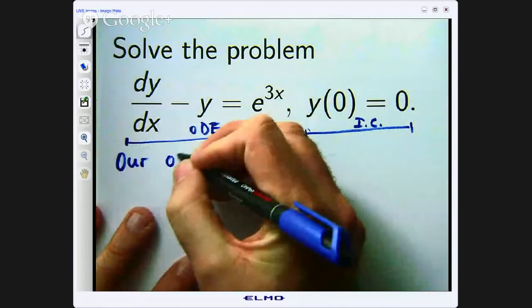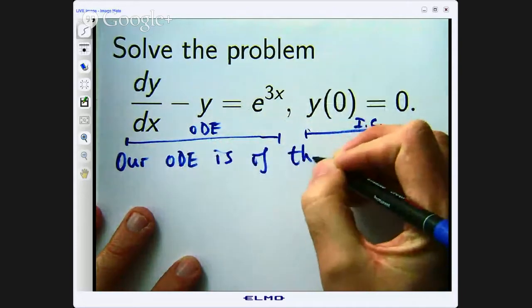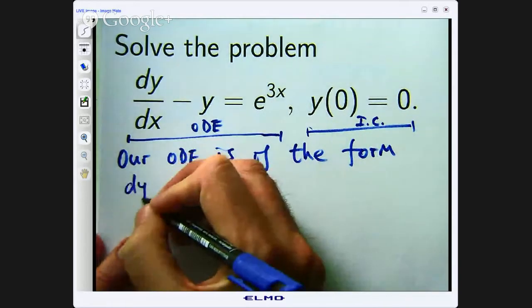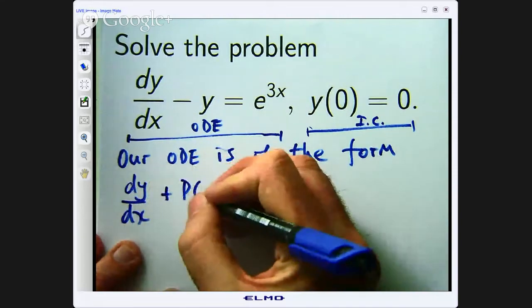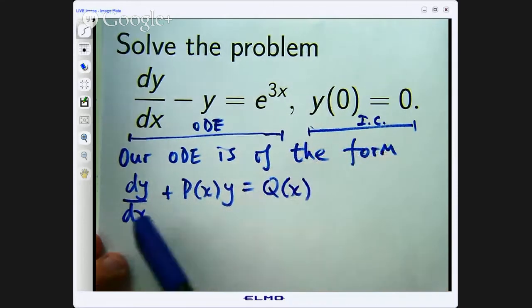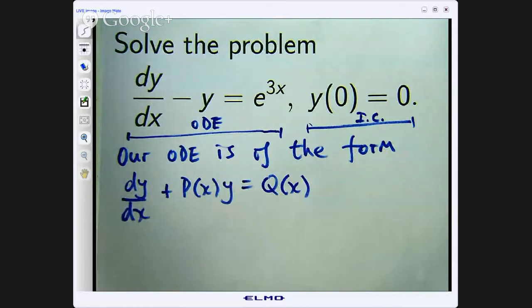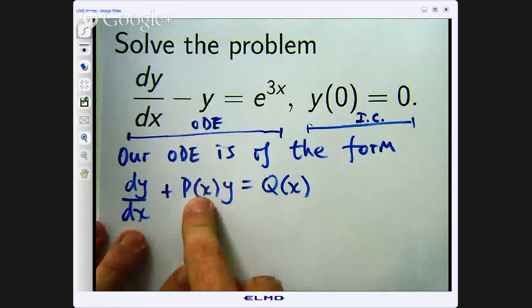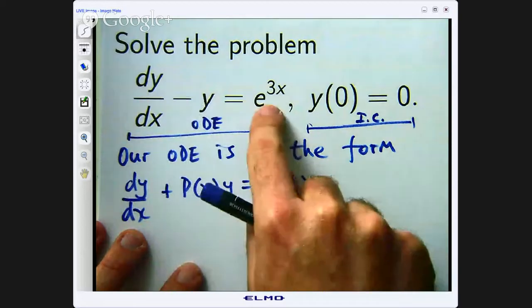Now ODE is of a special form. It is of the following form: dy/dx plus p times y equals q. And this is the general linear form. p and q are given functions. In this example p would just be the constant function negative one, q would be e to the 3x.